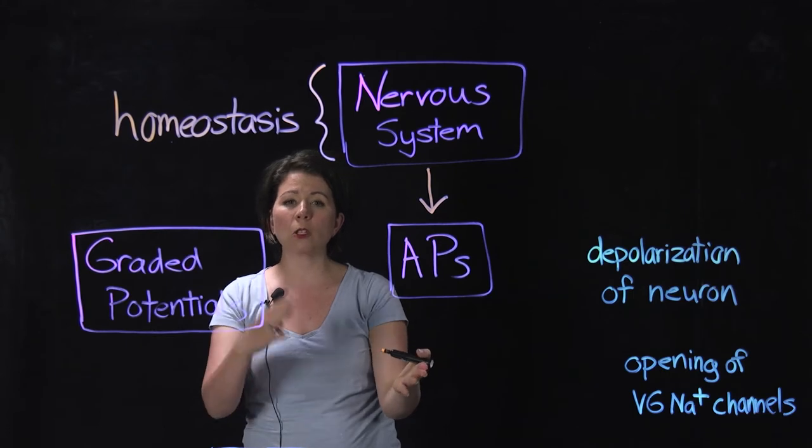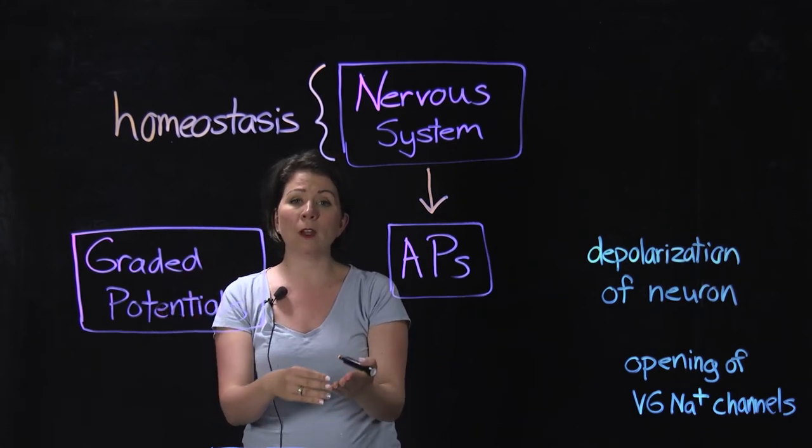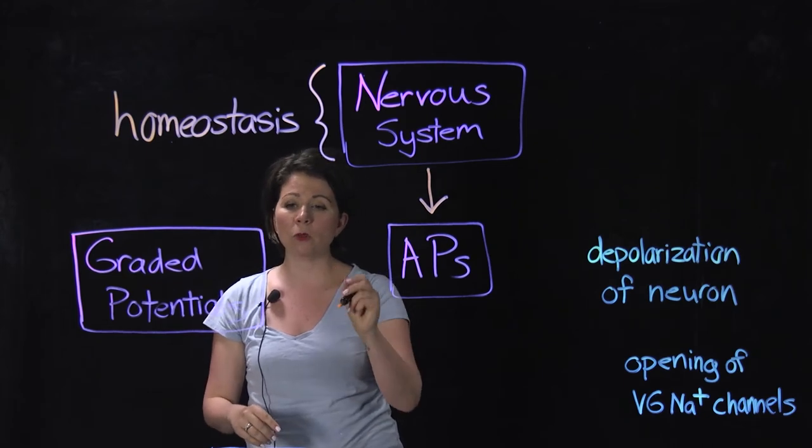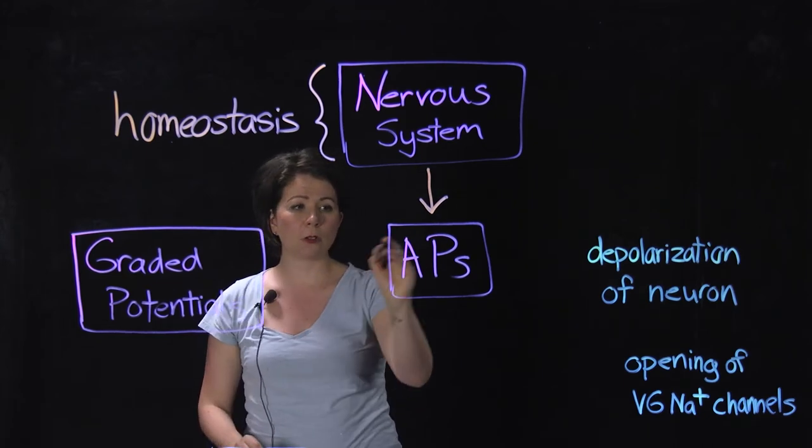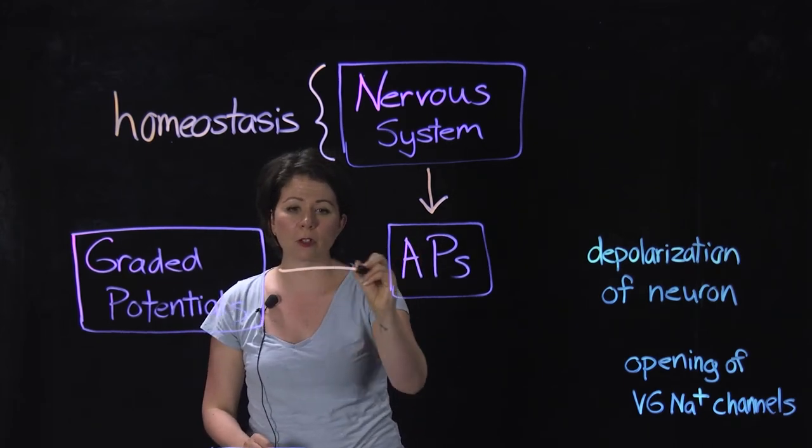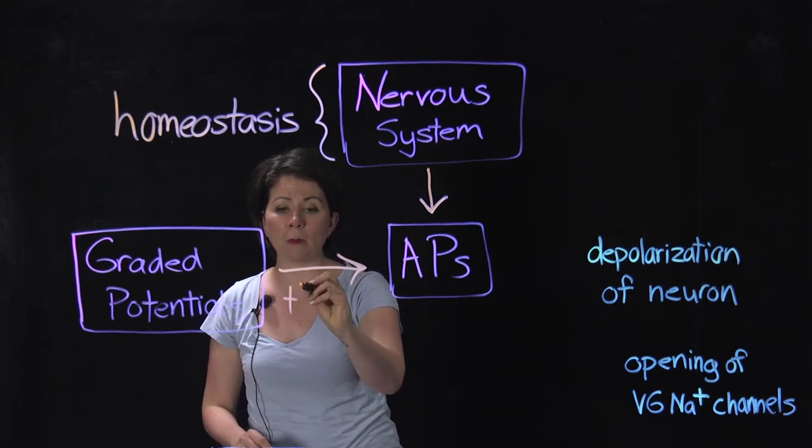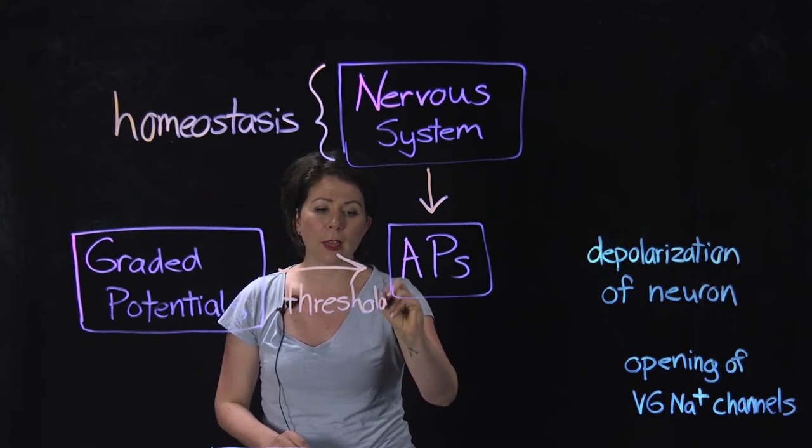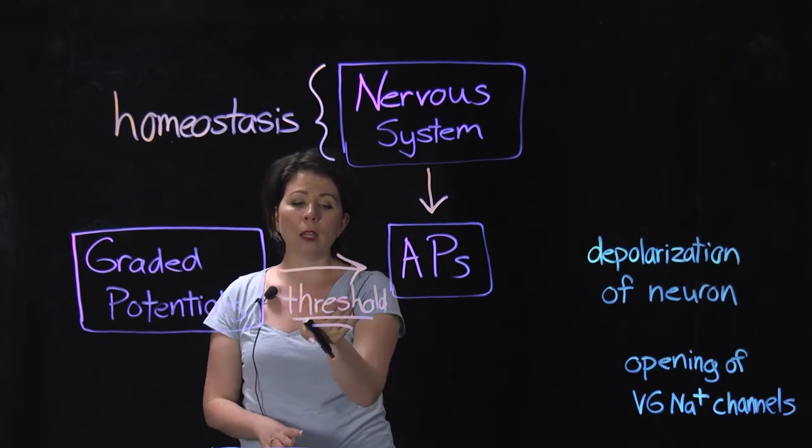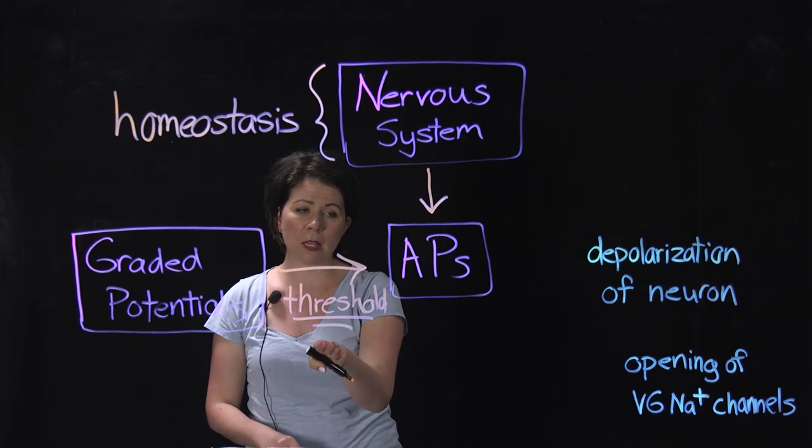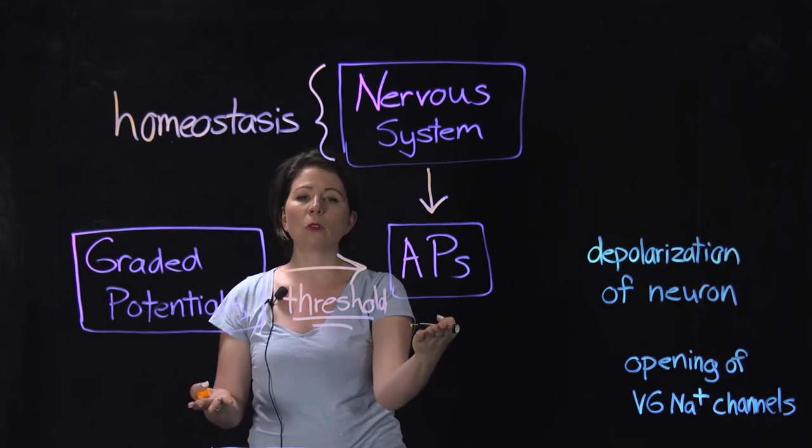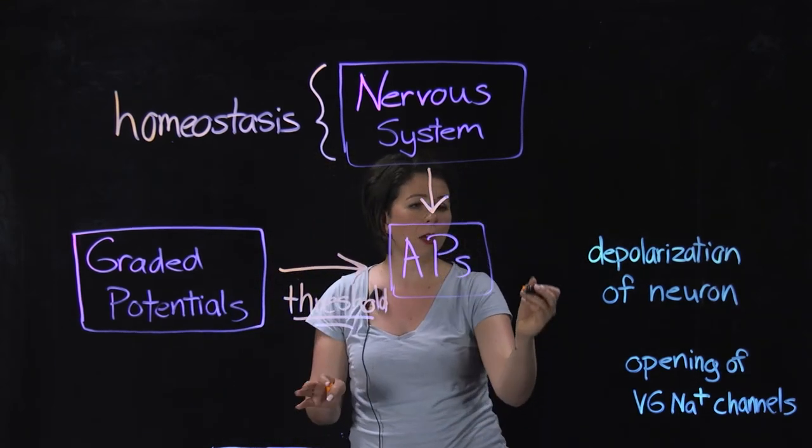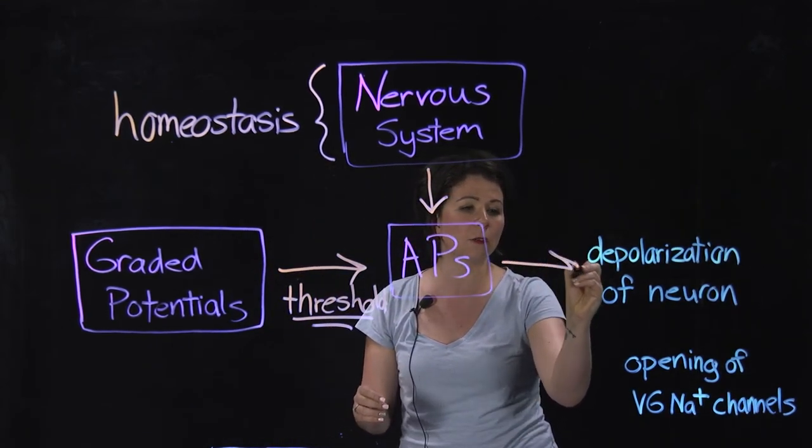And one thing that we compared and contrasted was this idea of graded potentials versus action potentials. Remember, graded potentials can change over time. They have a varying duration, varying amplitude, whereas action potentials do not. And graded potentials can cause action potentials if threshold is reached, remember, at that axon hillock. That's really the trigger point. That threshold is really important. If you don't have that threshold reached at the axon hillock, then you won't have any action potential firing.